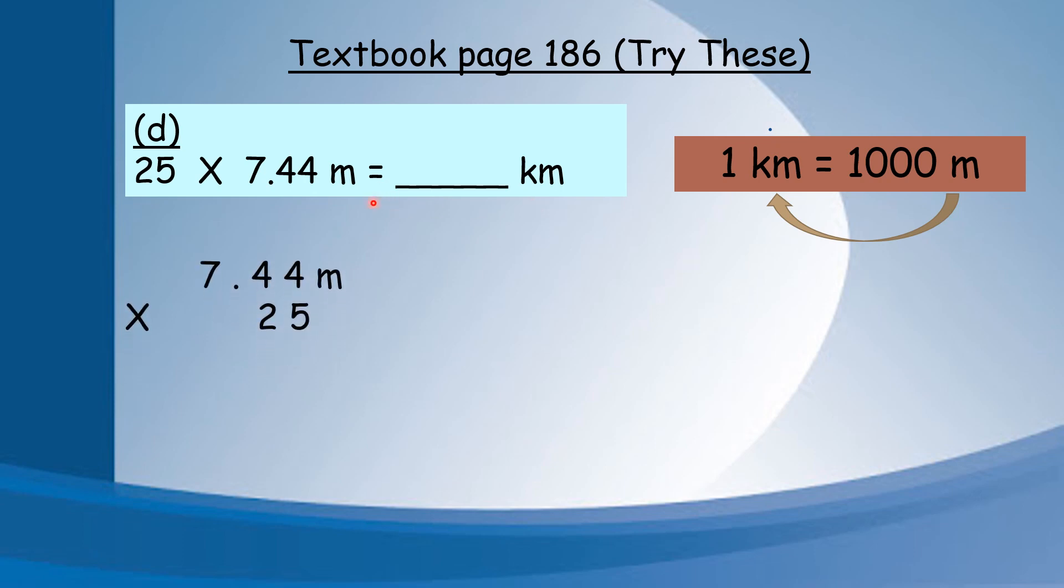For this one, I want to do like this first: 7.44 times 25. You can use this method or you can use lattice method to calculate the answer. When I start, I times 5, 4, 4, 20 and so on. Then start with 2 times 4. Finally, I have to add up. And don't forget the point. How to place the decimal point? You refer to this one: 1 decimal place, 2 decimal places, then point. Same: 1 decimal place, 2 decimal places then point.